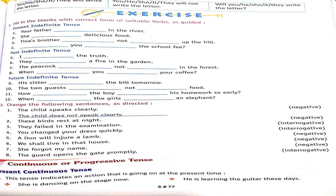Now I will give you some exercise so that you will be clear about it. First one: your father dash in the river. Since we are talking about one person — your father — we use 'swims'. Swim + S = swims. 'She cooks delicious food.' Now for the fifth sentence, it is past tense, so we use the second form: 'I told the truth' or 'I spoke the truth' — your choice.